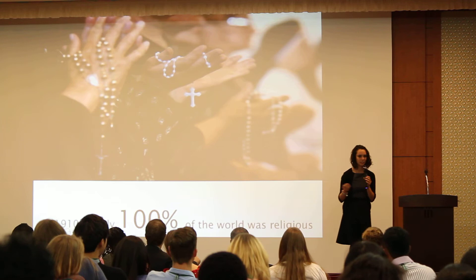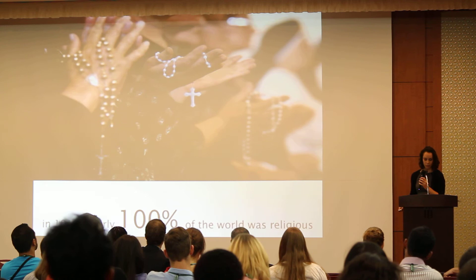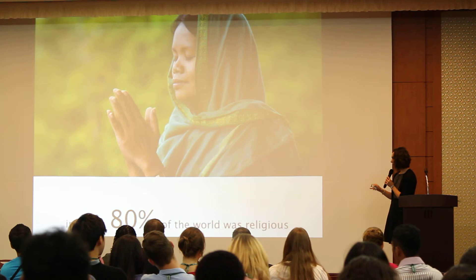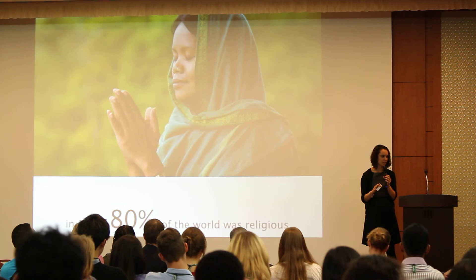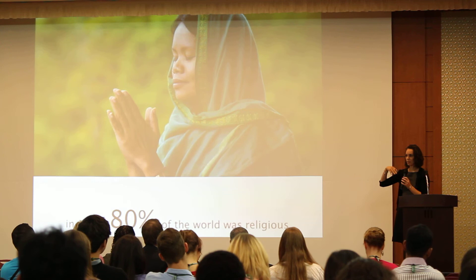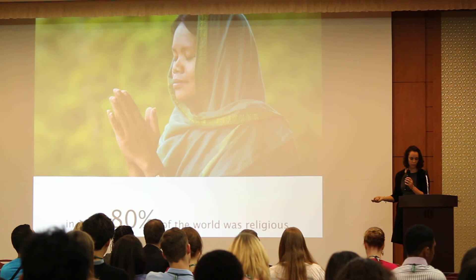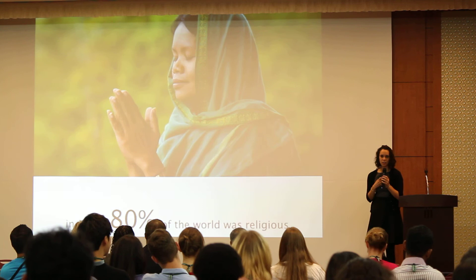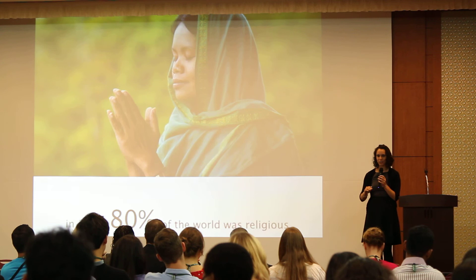Let's go back to 1910, when nearly 100% of the world was religious — very few people self-identified as atheist or agnostic. By 1970 this had changed drastically: 80% of the world was religious, meaning 20% was atheist or agnostic. Thinking of the 20th century context, the rise of communism and state-imposed atheism suppressed religion around the world. By 2020, we anticipate 90% of the world will be religious — so is there a global resurgence of religion?